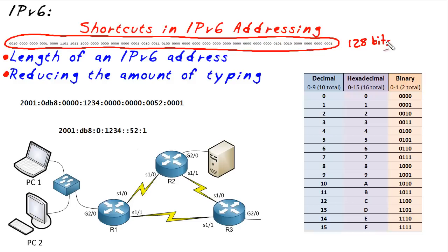It's 128 bits in length, and an IPv6 address has two basic parts: there's the network part and there's the host part, sometimes called the host ID part. The network part represents the street — everybody on the same street has that same street name, everybody on the same network has the same network number. The host ID is unique, just like a unique house number.